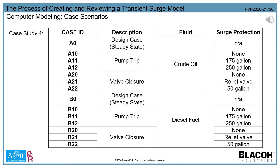After verifying steady state conditions, it is necessary to define the worst case surge initiators. Valve closures and unplanned pump trips tend to be the most common initiators, but they are certainly not the only ones. Once establishing the plausible cause of a surge event, the modeler will define the other critical operating parameters such as fluid type, operating scenarios, as well as comparing methods of surge protection. In case study number four, varying only a few parameters can lead to a rather large set of case scenarios. One additional parameter, say a low pressure and a high pressure condition, would double the number of case scenarios.